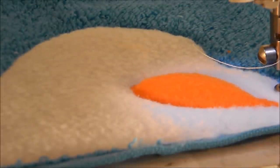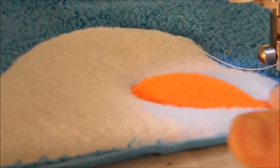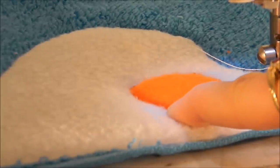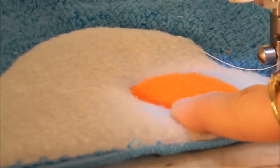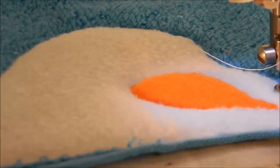I've done the tack down for the nose. So now I've cut around the nose as close as I can to that stitch line. So now we're ready to do the satin stitch around the snowman's face.